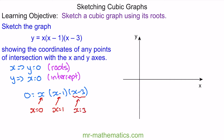Now we can plot these coordinates on our axis. Next, we find the value along the y-axis by substituting x equals zero. So y is zero multiplied by zero minus one multiplied by zero minus three, and anything times zero is zero, so y is equal to zero.